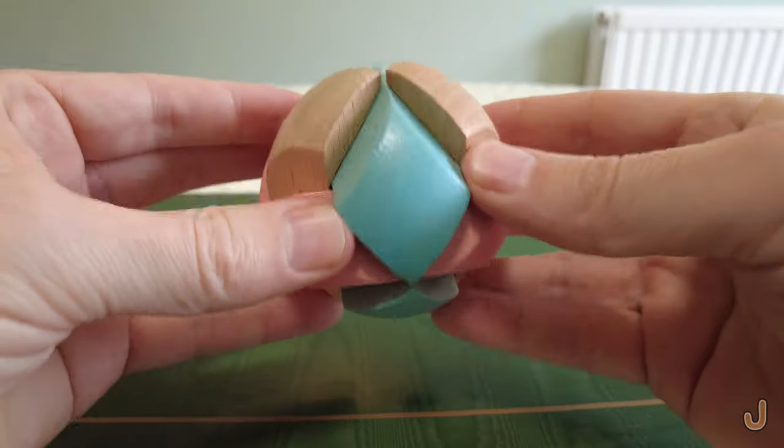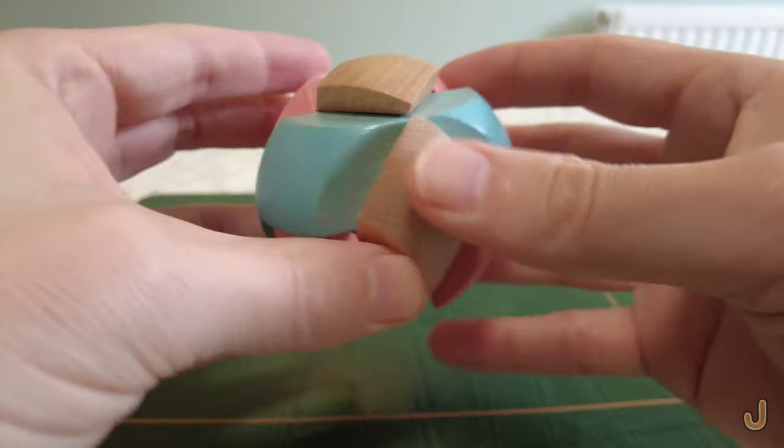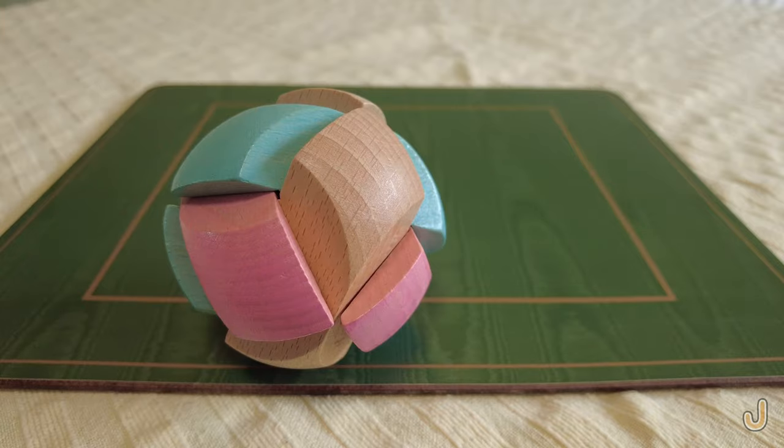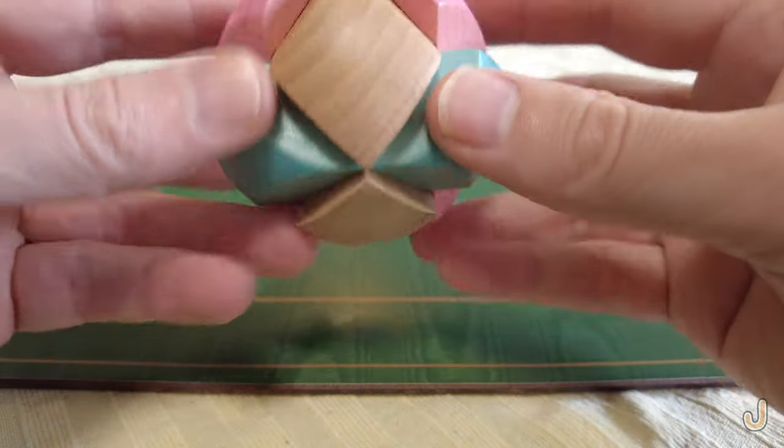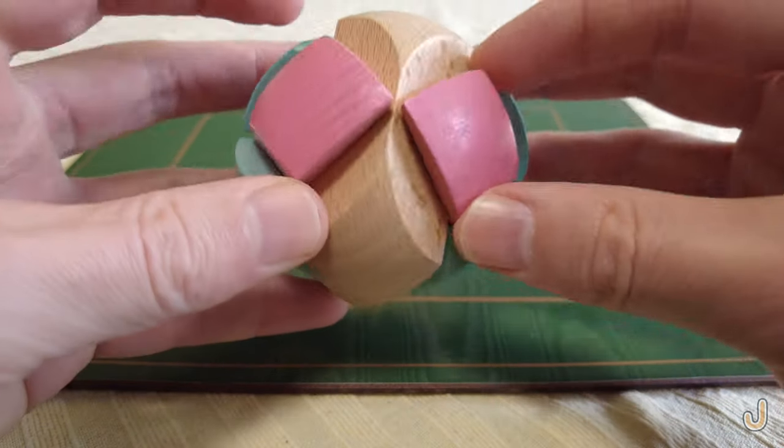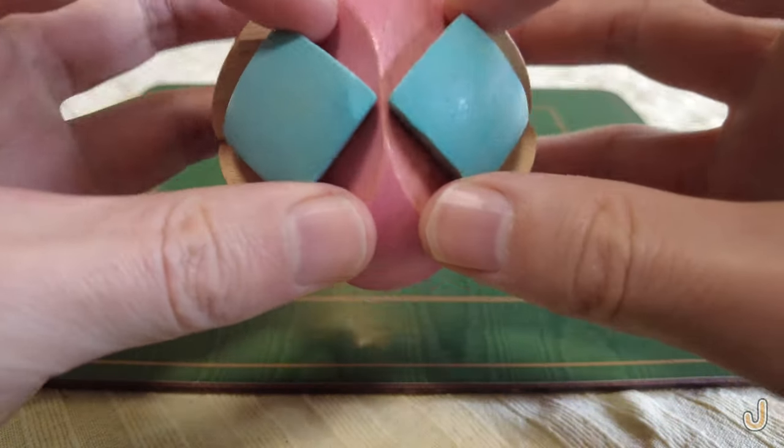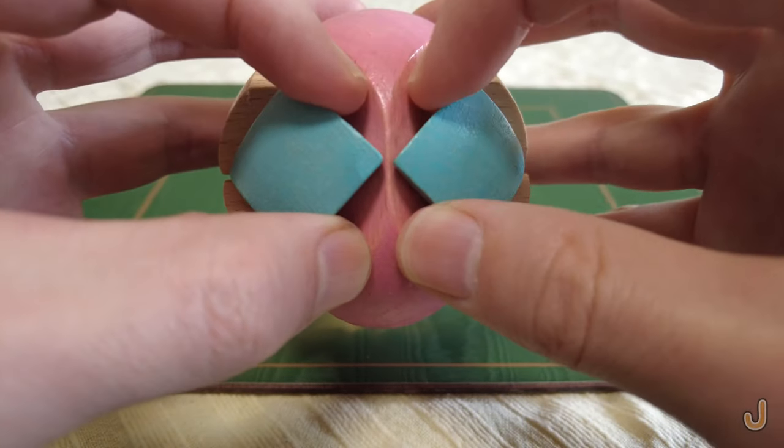It feels very tightly connected, there's no play in the parts, no looseness. Okay, so what you do to take the puzzle apart: look for the two parts that are facing each other like that - any two will do. Let's take these blue ones and pull them apart.